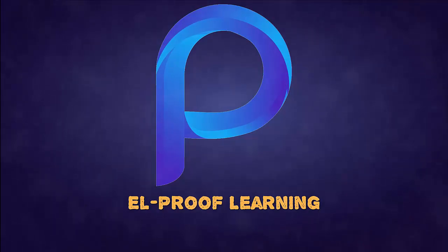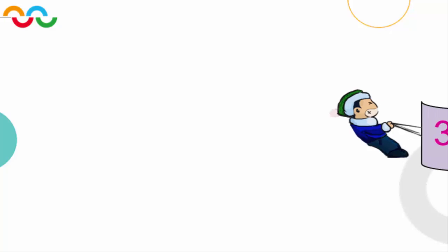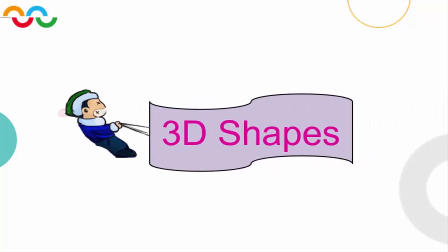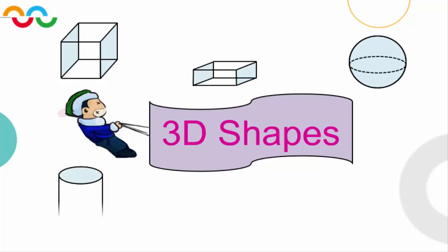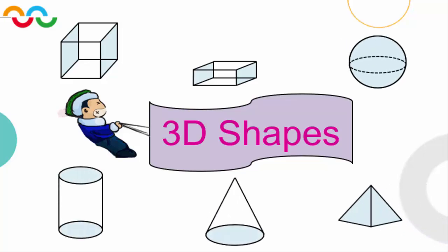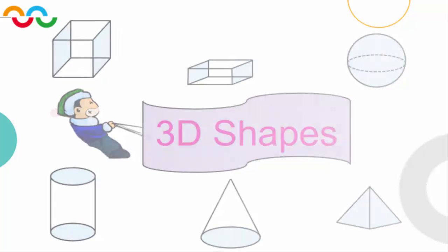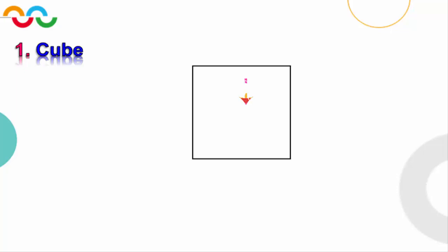Hello, welcome to the Prof Learning channel. In this video we will explain how to draw three-dimensional shapes, which are named as solids. Let's start with the first solid, which is the cube. To draw the cube there is more than one way, but the simplest way is the following: first, start by drawing a square like this. After that, from the middle of our square we start drawing another square which is identical to the first one.